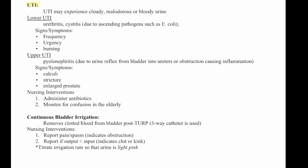UTIs may present with cloudy, malodorous, or bloody urine. There are two types: lower UTIs involve the urethra and cystitis due to ascending pathogens such as E. coli, with signs and symptoms of frequency, urgency, and burning. Upper UTIs include pyelonephritis due to urine reflux from the bladder into the ureters or obstruction causing inflammation, with signs such as calculi, stricture, and enlarged prostate.